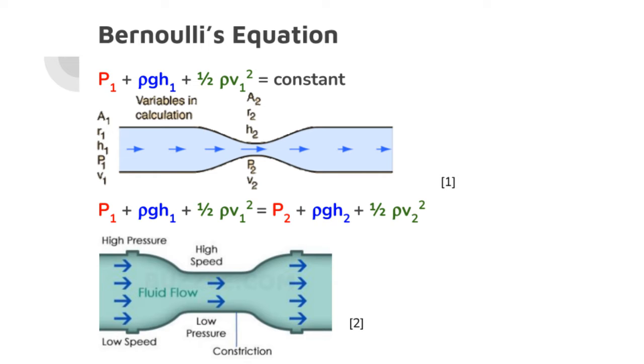Bernoulli's equation is a statement of the conservation of energy for flowing fluids. This equation relates to the pressure, elevation, and velocity of a fluid and tells us that its energy along a streamline is constant.